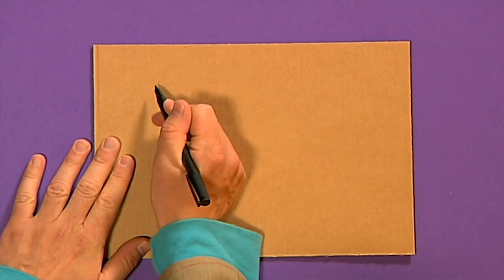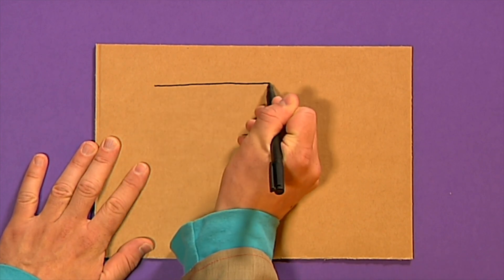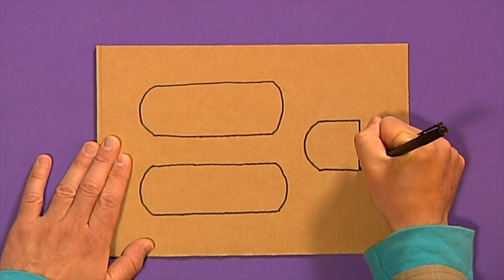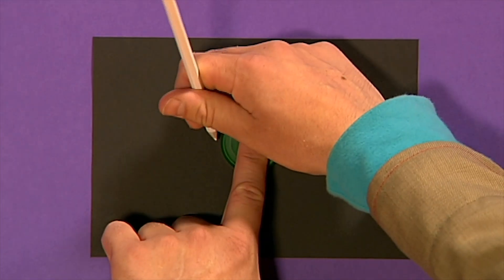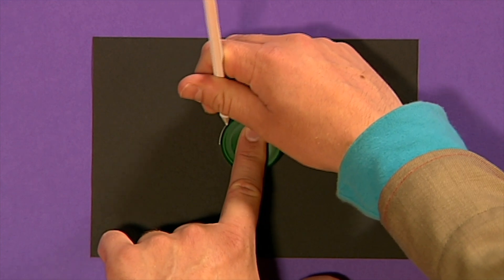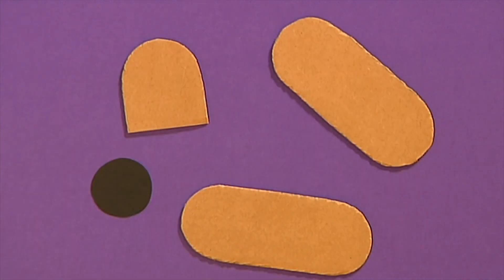For the plane's wings, draw two big sausage shapes and half a sausage shape onto the cardboard. Next, draw a circle onto the paper by drawing around the plastic lid, and carefully cut all the shapes out.